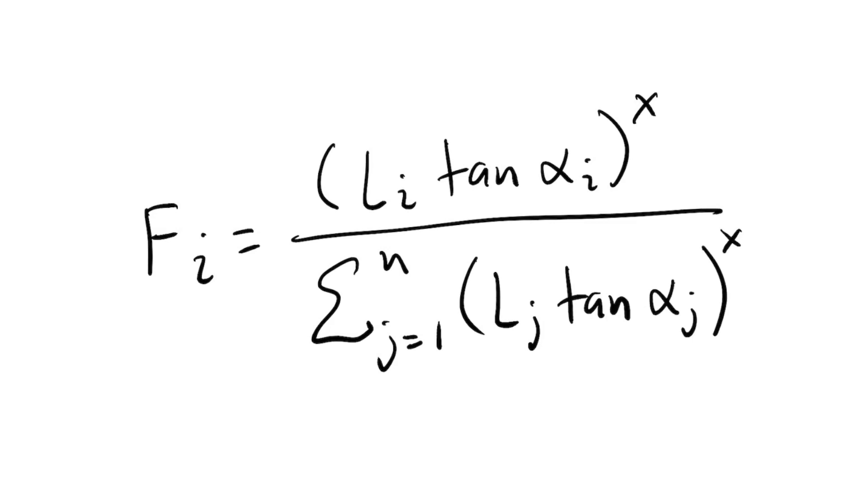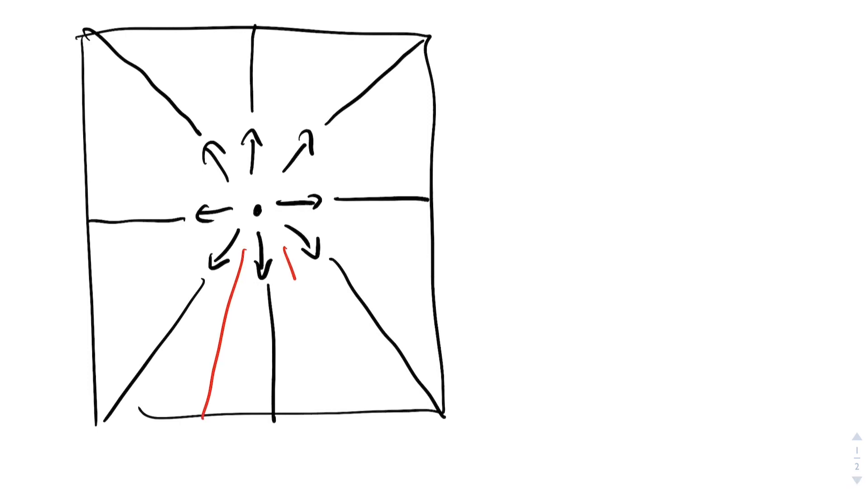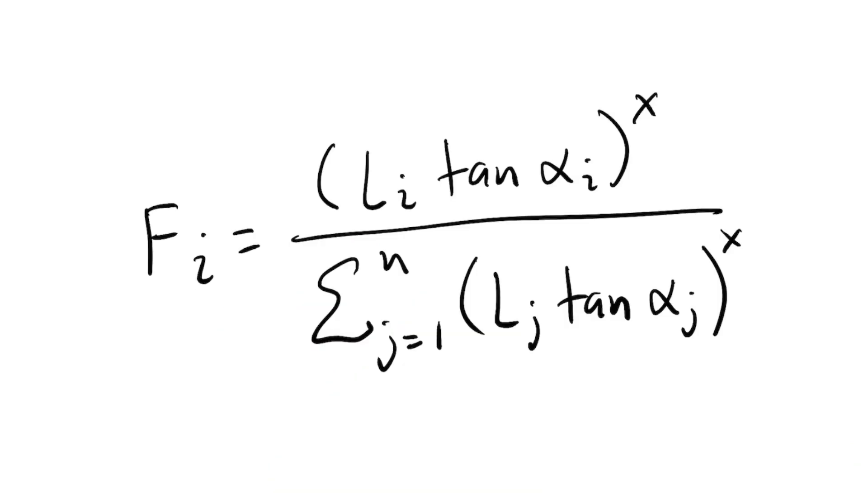Here, Fi is the flow towards a neighbor, Li is the flow width, which is the square root of 2 divided by 4 for the diagonal neighbors and 1 half for the others, and this value comes from the geometry of the DTM cells. If the width of a cell is 1, then the width of the flow to the up, down, left and right cells is 1 half, and the width of the flow to the diagonals is given by a right triangle where the sides are 1 fourth long. This is about 0.354. Going back to the equation, alpha i is the gradient, and so the tangent of alpha i is the slope. x is an exponent that controls the dispersion, and n is the number of neighbors of the cell. Note how the bottom part of the equation is just a way to normalize all the flows.